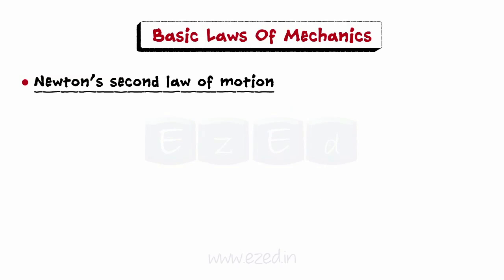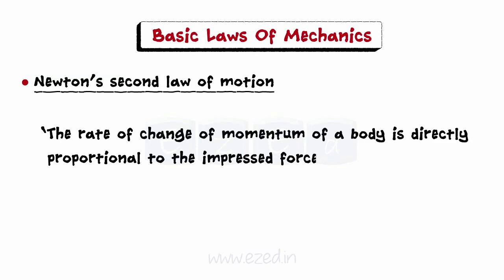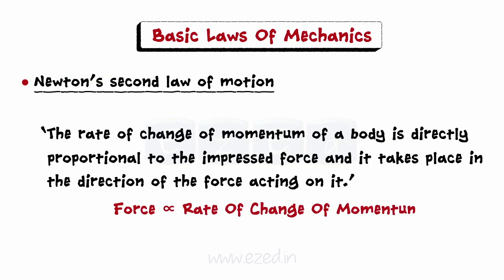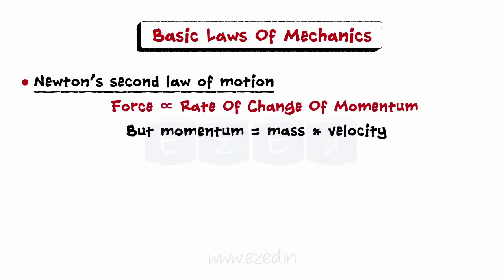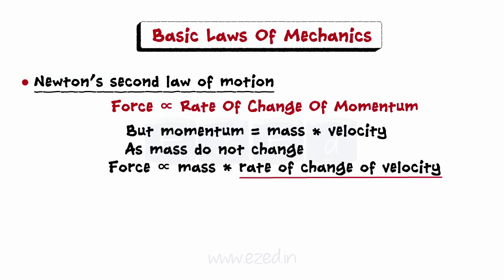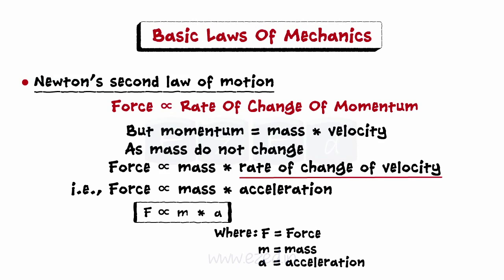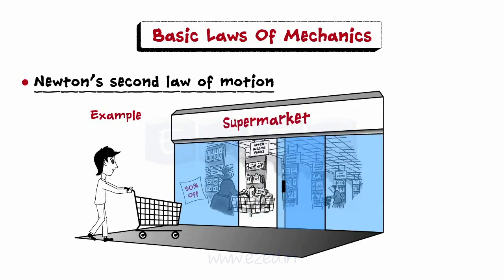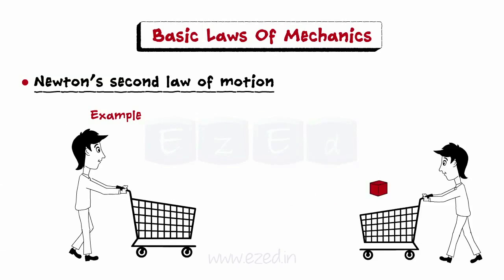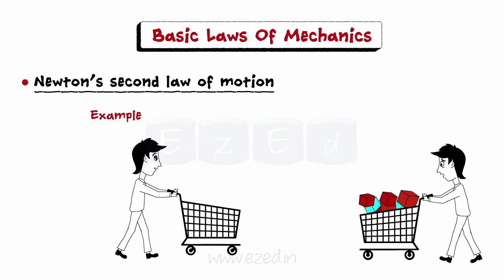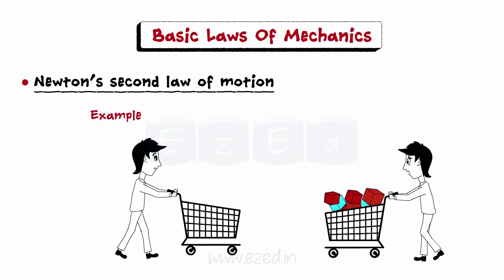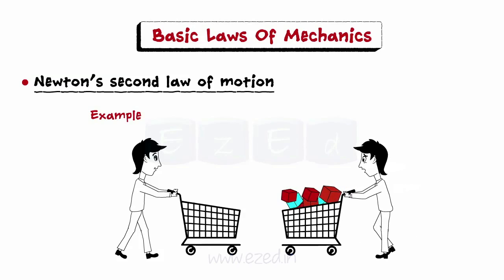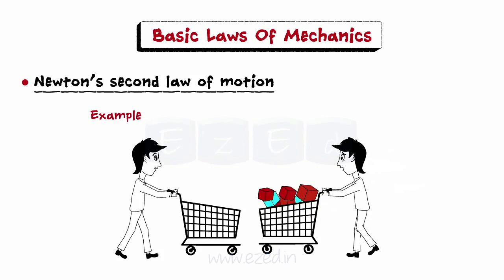Newton's second law of motion states that the rate of change of momentum of a body is directly proportional to the impressed force and takes place in the direction of the force acting on it. Since mass does not change, rate of change of velocity can be expressed as acceleration. Thus, force applied is directly proportional to the mass of the body and its acceleration. Consider a man shopping at a supermarket — it is easier for him to push an empty shopping cart than a full one. From Newton's second law, we conclude that more force must be applied to a larger mass in comparison to a smaller mass in order to accelerate an object.